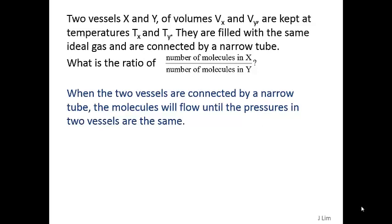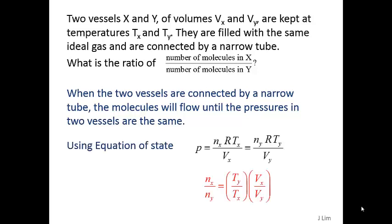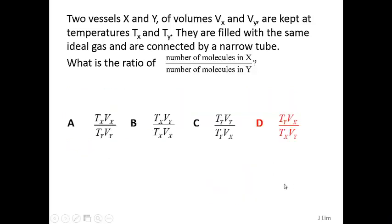When the two vessels are connected by a narrow tube, the molecules will flow until the pressures in both vessels are the same. Then, using the equation of state P equal to nRT divided by V, we get the following relationship. So the answer is D.